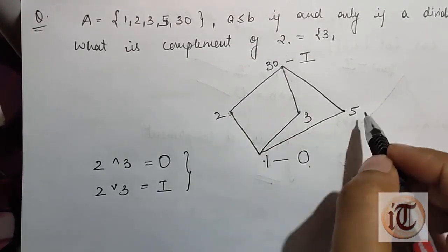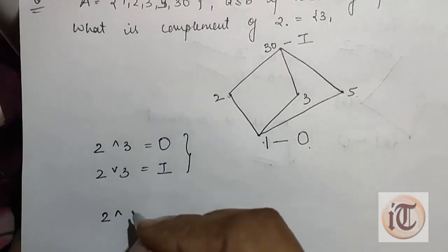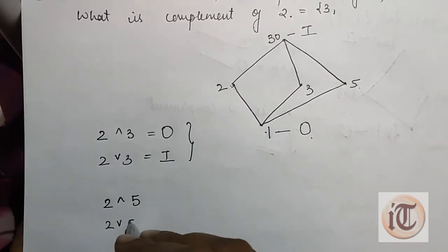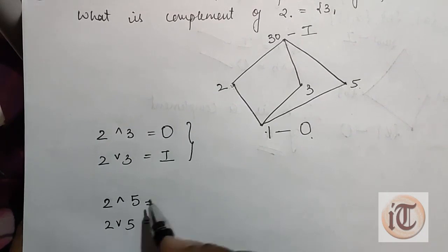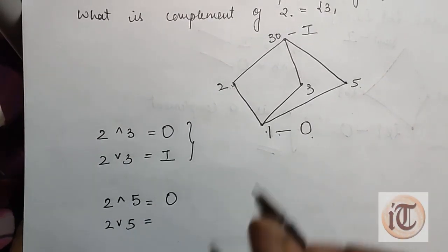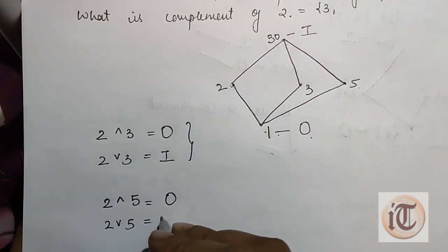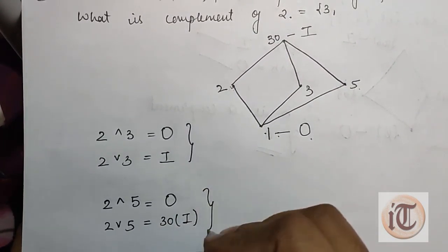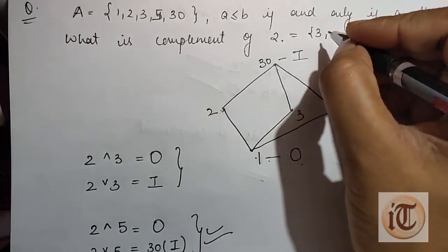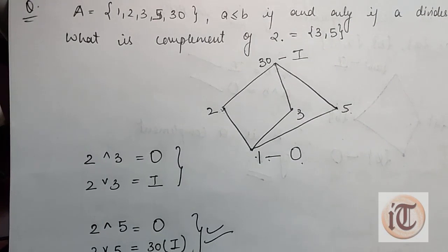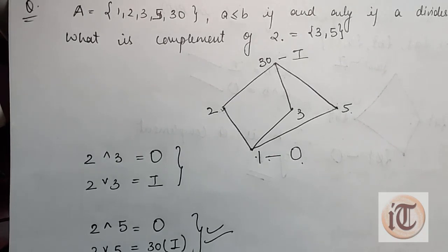Now comparing 2 with 5: the GLB of 2 and 5 is 1, which is o — satisfied. The LUB of 2 and 5 is 30, which is i — satisfied. So 5 is also a complement of 2. Similarly we compare all other elements with 2. The complements of 2 in this lattice are 3 and 5. This is how we find the complement of a given element in a lattice.